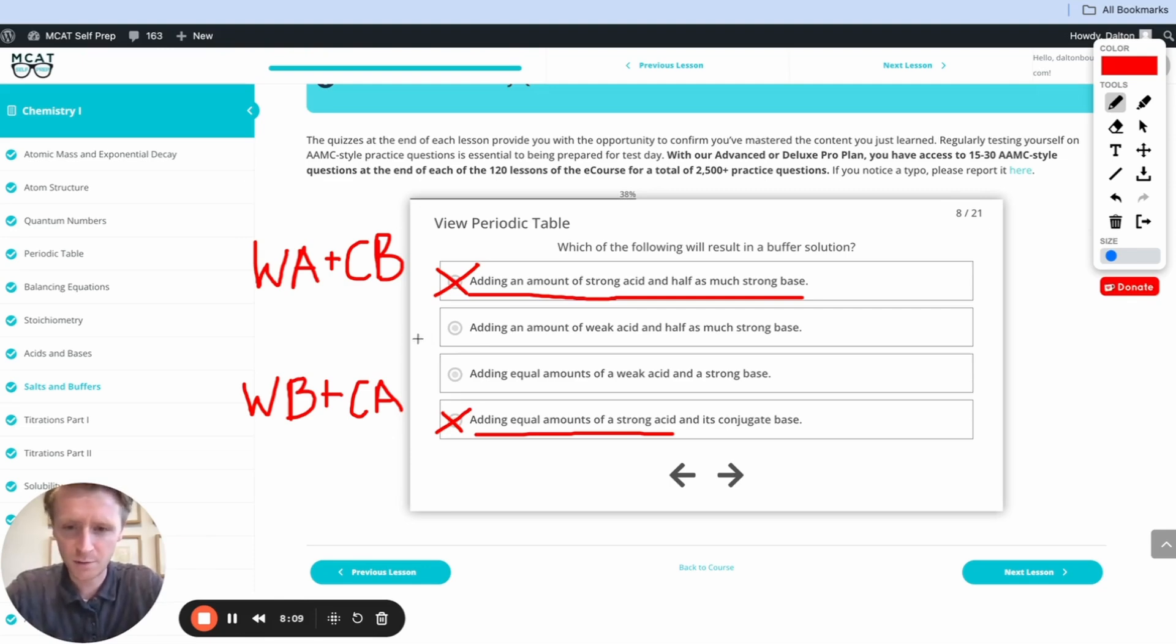Let's look at these other two options right here. Adding an amount of weak acid and half as much strong base or adding equal amounts of a weak acid and a strong base. Now a strong base really likes to take protons. It's really good at taking protons. So if we had equal amounts of a weak acid and a strong base, what do you think is going to happen?